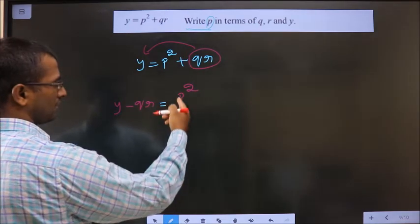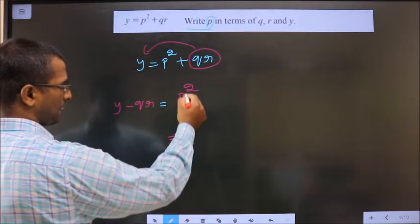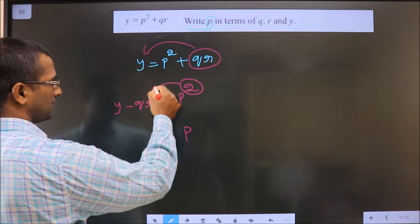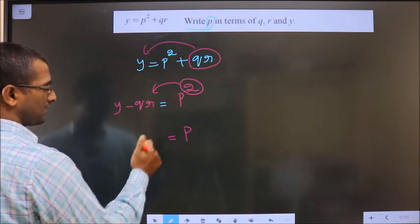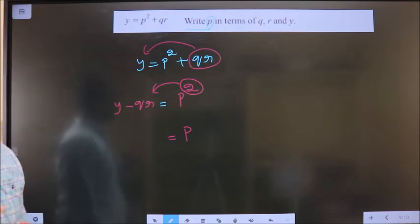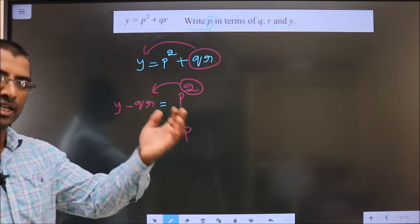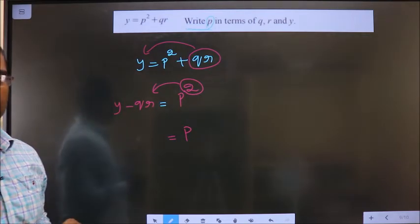Next, from p squared to get p, this square needs to be shifted to the other side. Square gets shifted to the other side, it will become square root. Remember, square shifting to the other side will become square root.